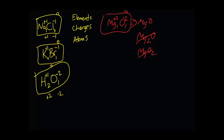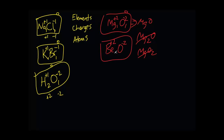Let's try another group 2 with a group 6. Oxygen always has a minus 2 charge. Let's combine it with beryllium. Write the elements first, then the charges: beryllium is group 2, so that's plus 2. It gives its electrons to the more electronegative oxygen, which gains 2 electrons. That works out nicely, so that's just beryllium oxide — BeO.